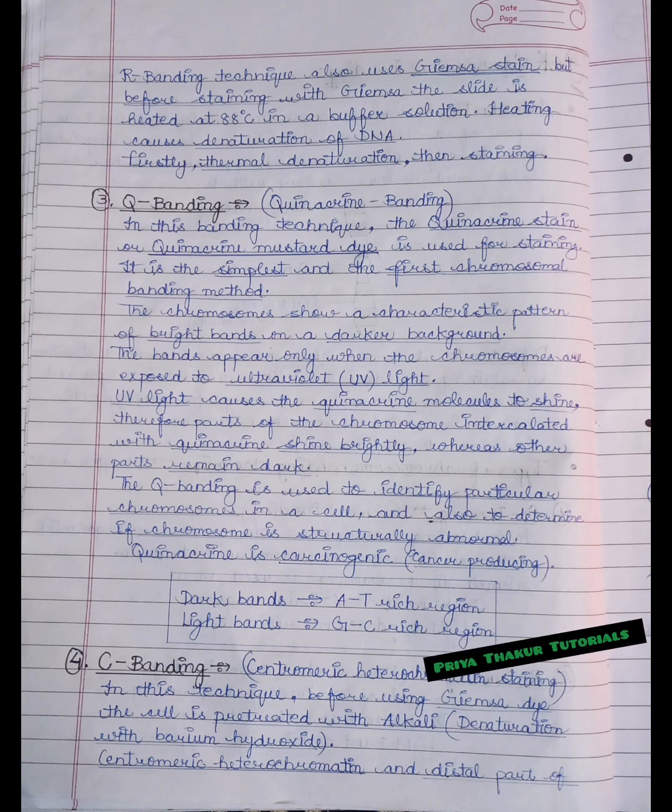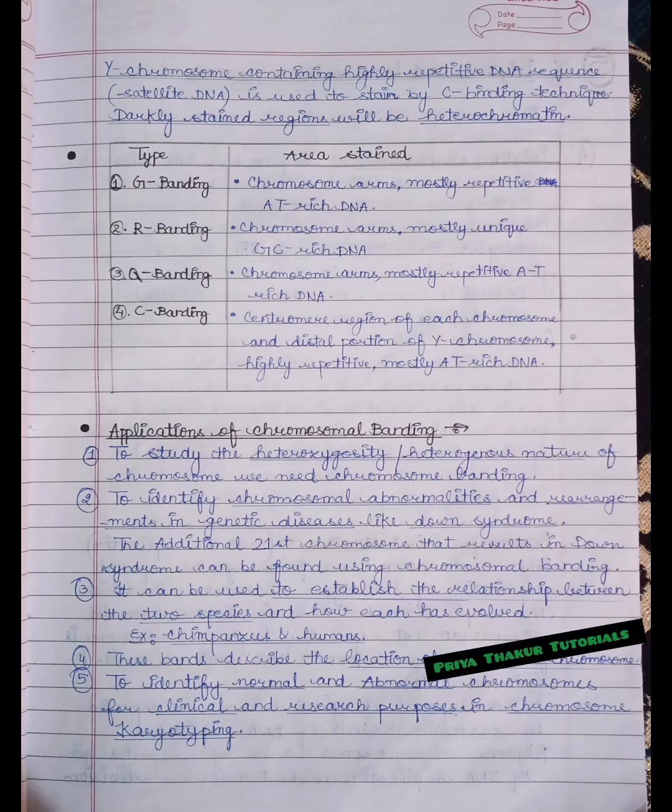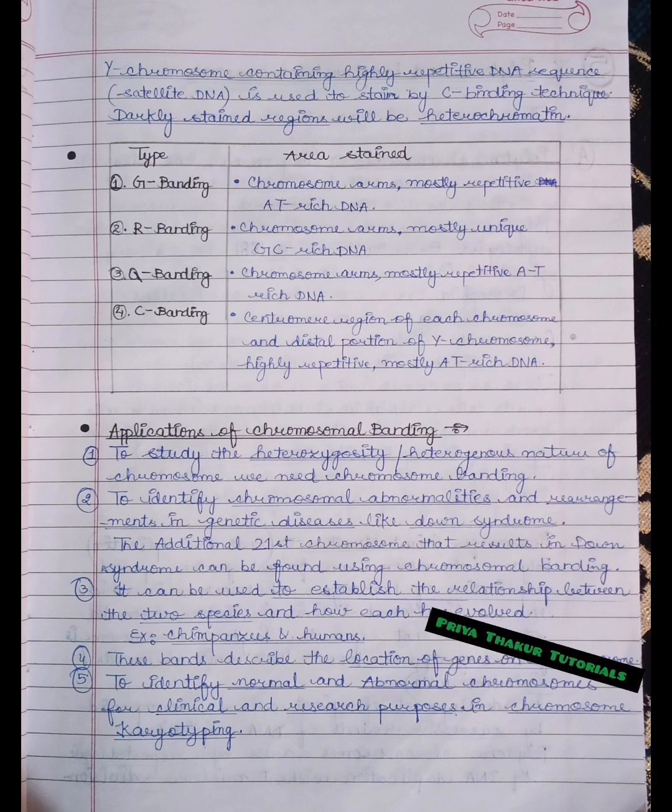The fourth type is C banding. It refers to centromeric heterochromatin staining. In this technique, before using Gimsa dye, the cell is pre-treated with alkali, that is denaturation with barium hydroxide. Centromeric heterochromatin and distal part of Y chromosome containing highly repetitive DNA sequence is stained by C banding technique. Darkly stained regions will be the heterochromatin.